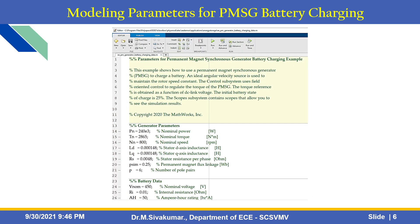Here the modeling parameters and reusable code for PMSG battery charging are available in this example. Using this example you can set general parameters like nominal power, nominal torque, nominal speed, stator inductance based on D and Q axes, stator resistance, and permanent magnet flux linkage. You can also vary the parameters and input battery data such as nominal voltage, internal resistance, and ampere-hour rating. Using this reusable code we can check the analysis of PMSG battery charging.